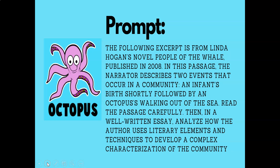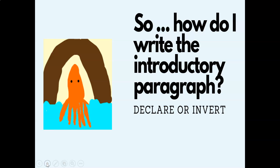Here's the prompt, just to re-familiarize ourselves — it comes from the 2022 exam. The following excerpt is from Linda Hogan's novel People of the Whale, published in 2008. The narrator describes two events in a community: an infant's birth, shortly followed by an octopus walking out of the sea. Read the passage carefully, then in a well-written essay, analyze how the author uses literary elements and techniques to develop a complex characterization of the community. This one was really odd and a little tricky — for a few of my students, it went right over their heads, but several of them crushed it.